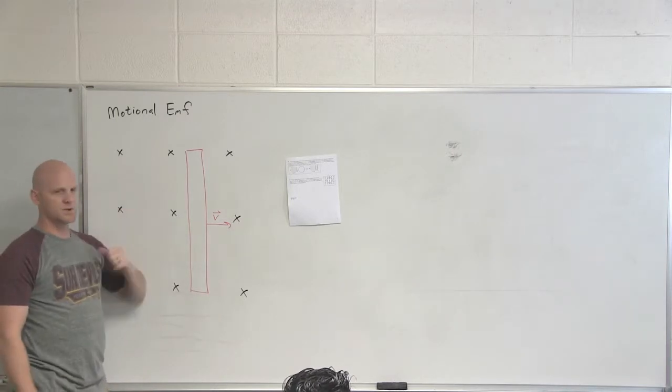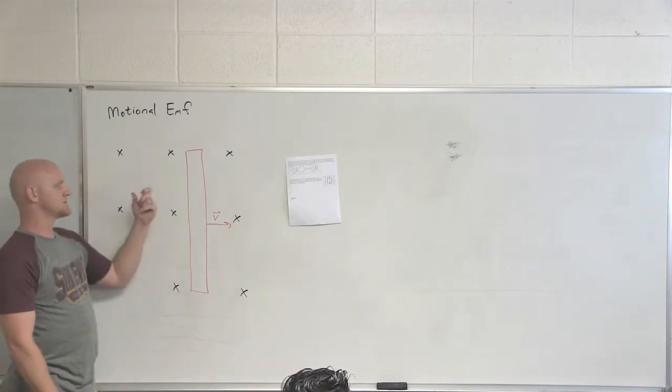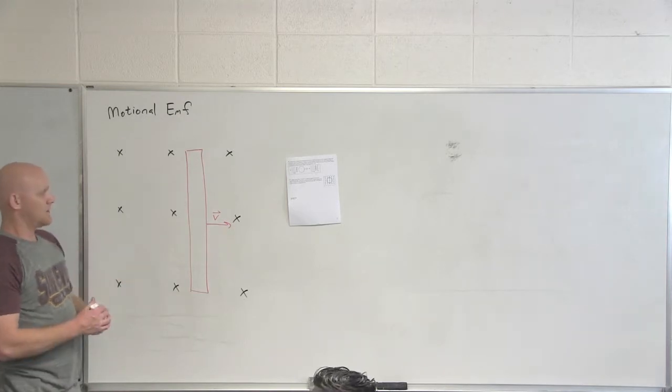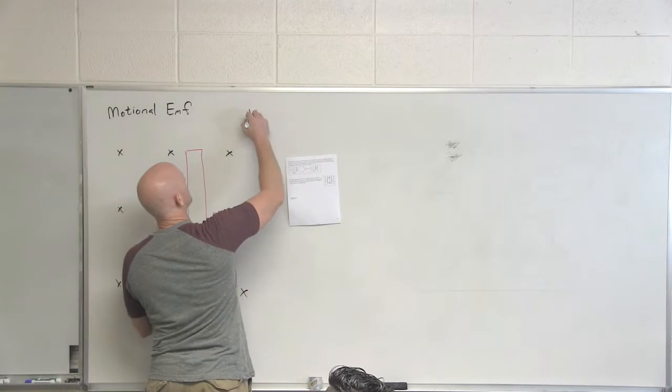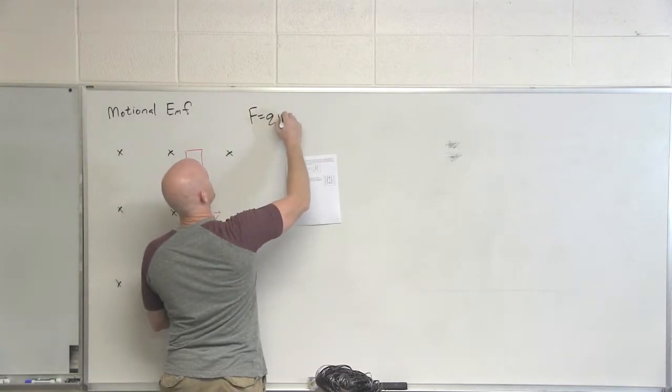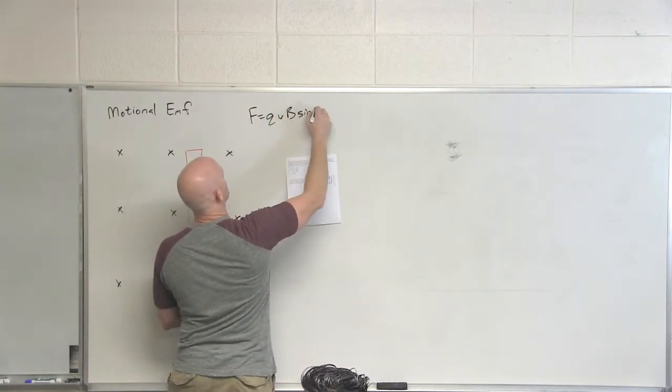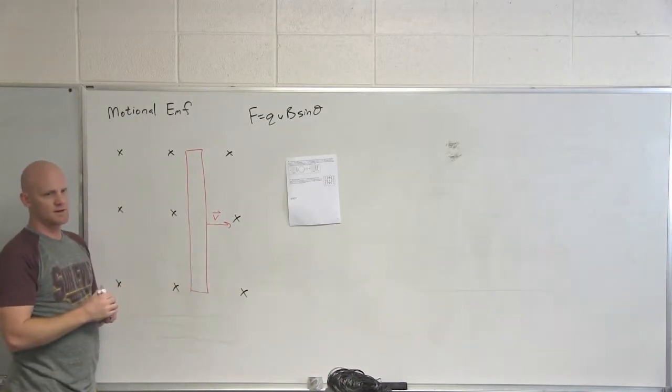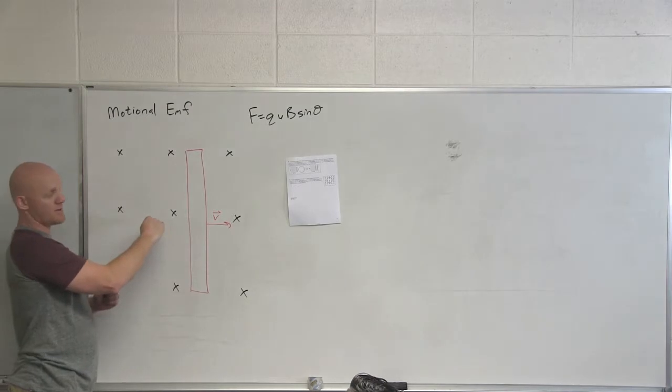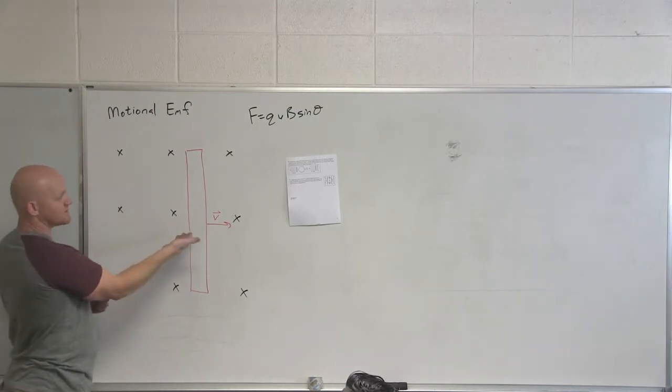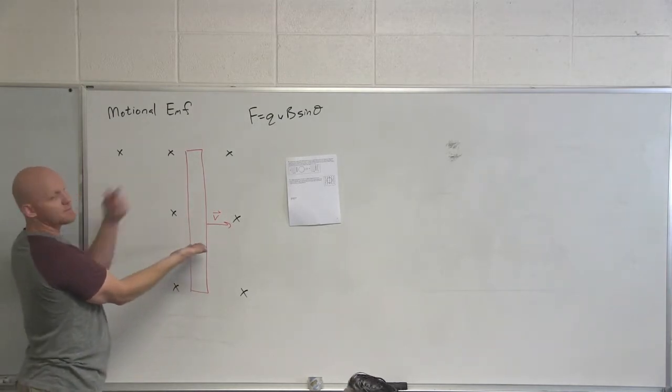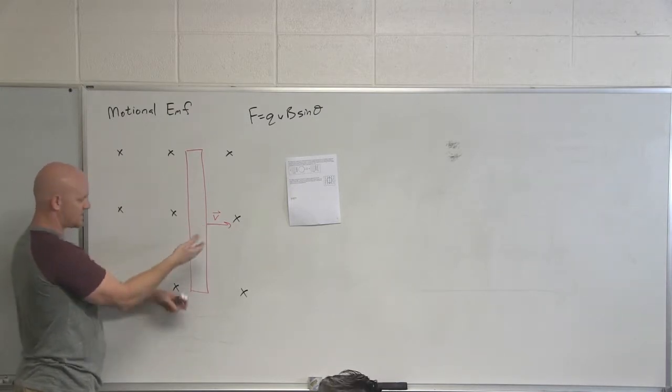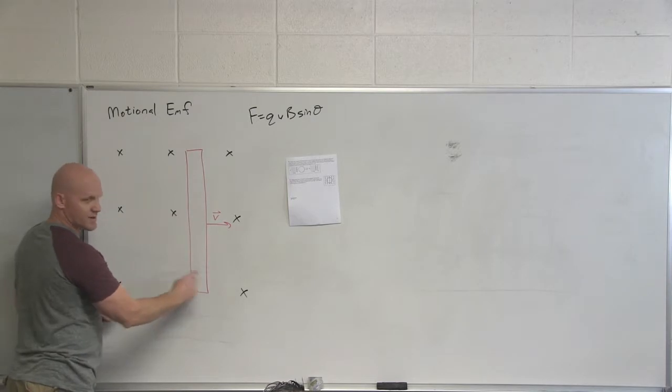So in this case, we learned that force equals QVB sine theta, things of this sort. The question is, I want to know what direction is that force going to be. So you recall the right-hand rule associated with that. So where do I need to point my fingers? Fingers in the direction of the magnetic field when I point my thumb, direction of the velocity, and the force comes out your palm for a positive charge, which means a negative charge would actually be going in the opposite direction. And so what we find out is that electrons are really going to travel this direction.